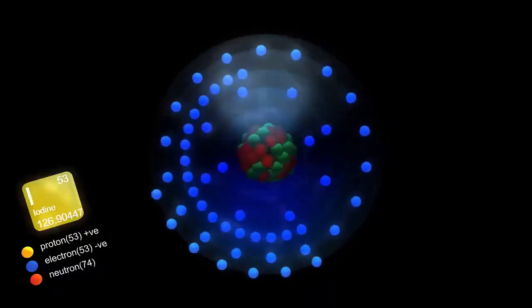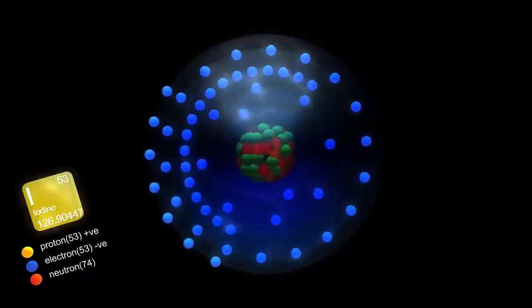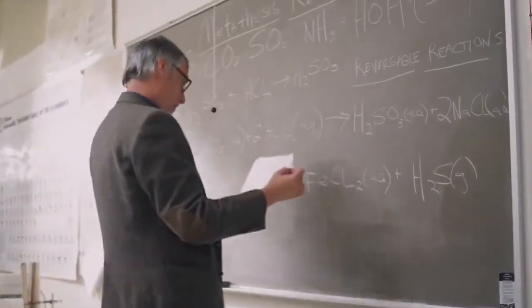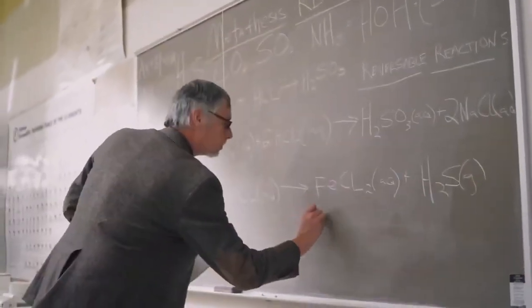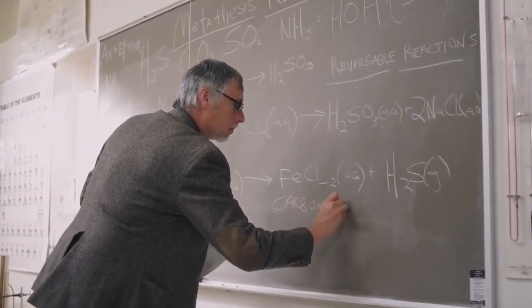These fermions interact through three types of fields: electromagnetism involving photons, the strong nuclear force involving gluons, and the weak nuclear force involving W and Z bosons. According to Cambridge theoretical physicist David Tong, without these force fields, matter particles would drift aimlessly in the universe without interactions or interesting behaviors.